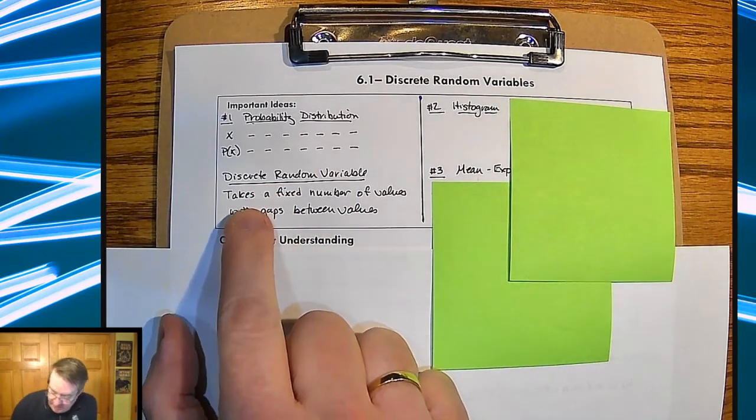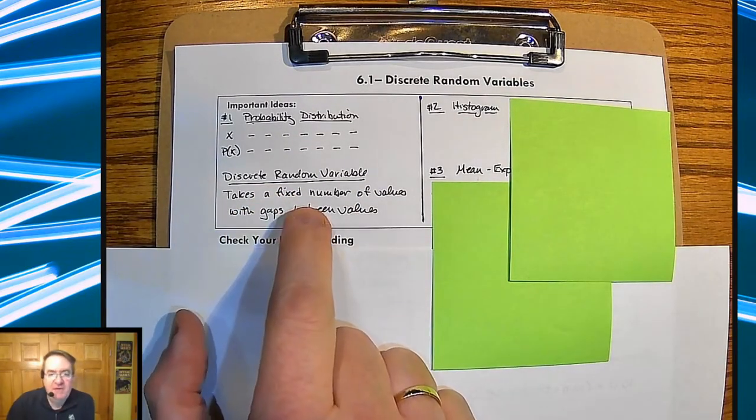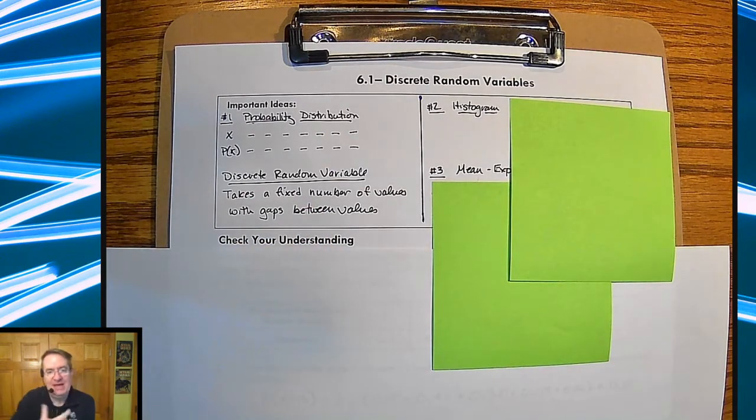Discrete random variable takes a fixed number of values, and there's gaps between the values. So again, things like number of children, number of games somebody has played.